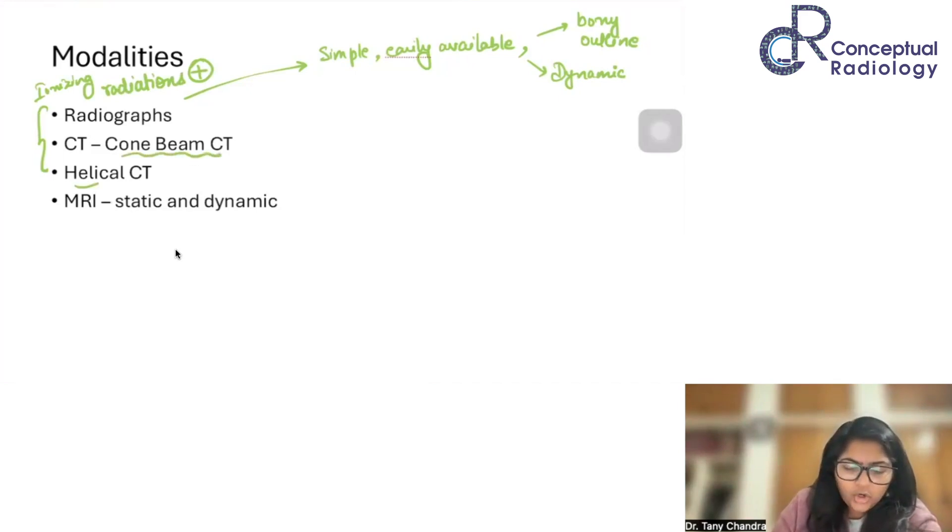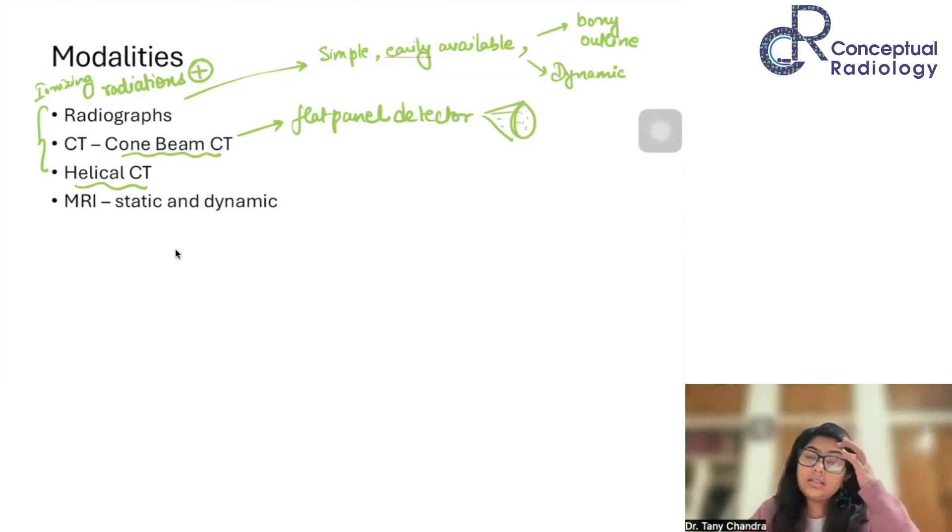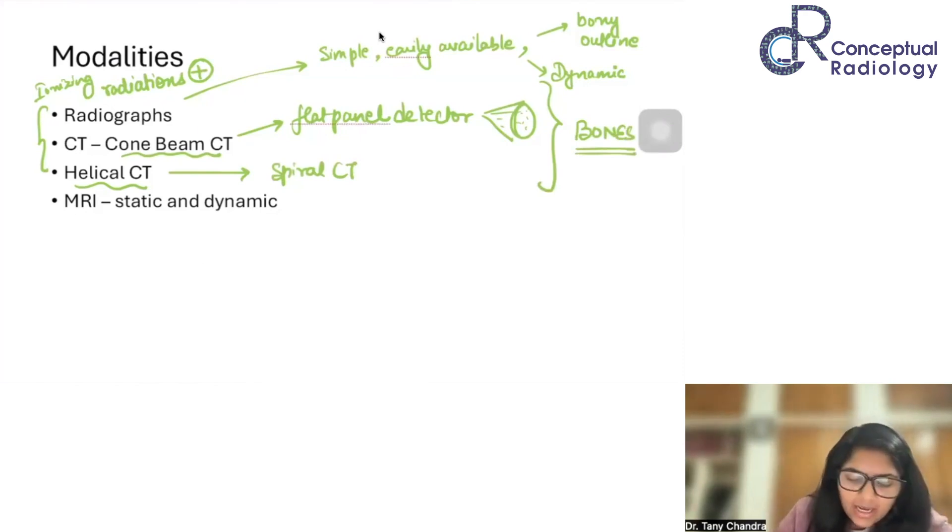Cone beam CT or helical CT, they are two different kinds of CT. In cone beam CT, you have a flat panel detector which you will rotate around and collect a cone shape of x-ray beam. It will have lesser resolution as compared to a helical CT, but still it is quite commonly used in the dental setups. Helical CT is our normal spiral CT. Again, all the three are really good to look at bones. They all have ionizing radiation. And out of these, only the radiographs remain dynamic.